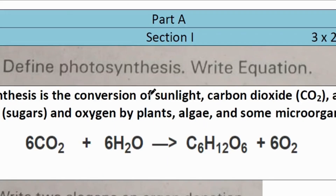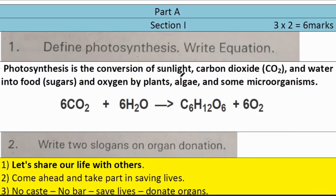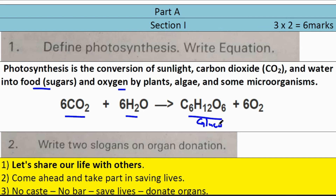Define photosynthesis and write its equation. Photosynthesis is the conversion of sunlight, carbon dioxide, and water into sugars and oxygen. The equation is: 6CO2 + 6H2O → C6H12O6 (glucose) + O2.